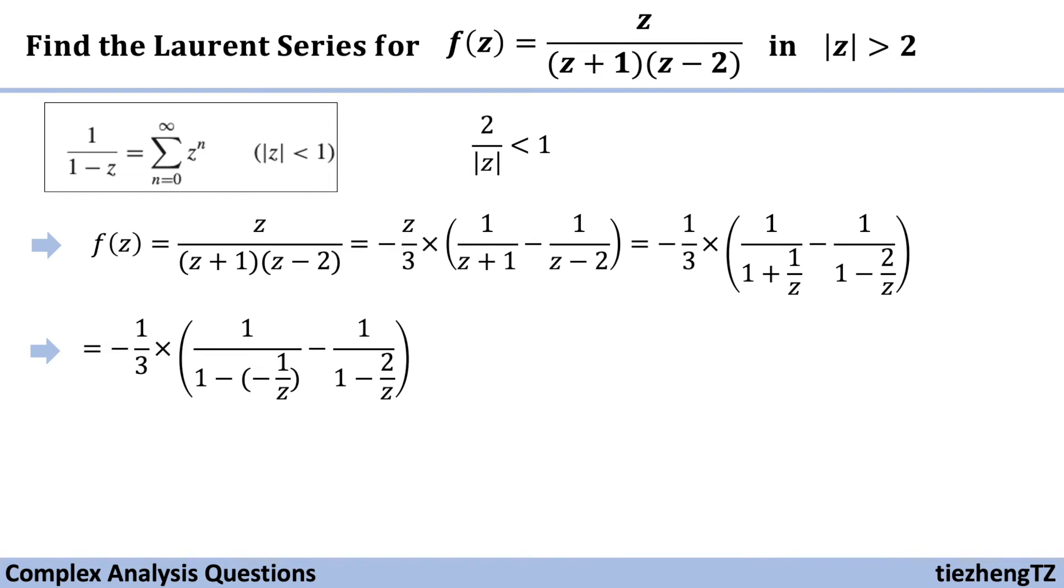So we can just substitute this -1/z and 2/z both into this given form to find the Laurent series, which becomes this equation.